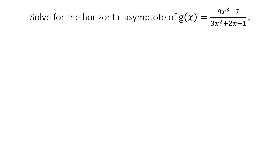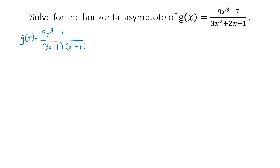Last example: solve for the horizontal asymptote of g(x) = (9x³ − 7) / (3x² + 2x − 1). Let's try factoring to reduce to lowest terms. Since the numerator is non-factorable, we copy it. Factoring the denominator: factors of 3x² are 3x and x, and factors of negative 1 are negative 1 and positive 1. There is no common factor to cancel, so we take the given since it is already in simplest form.